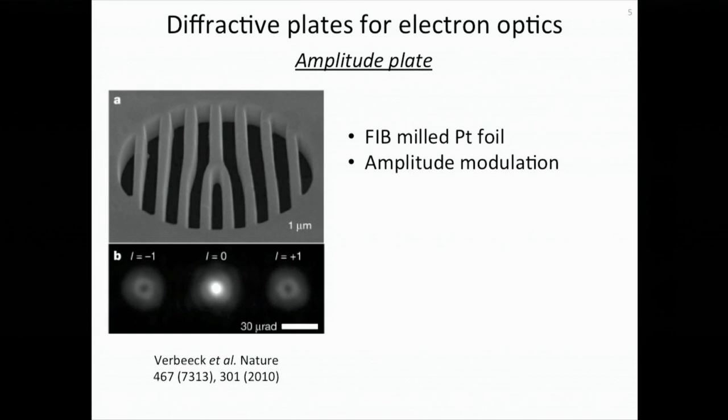Because this kind of structure imposes interesting properties to the diffracted electron beams, this structure is also called a diffractive plate. The example shown in this slide is effectively an amplitude plate, because it is made of a relatively thick platinum foil. The platinum material either blocks the electron beam, or the electron beam transmits between the ribbons of this structure, so it imposes amplitude modulation to the incoming electron beam.